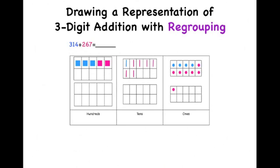Let's take ten of the ones and trade them for one ten. Now that we have regrouped or traded ten ones for one ten, we now have five hundreds, eight tens, and one one.